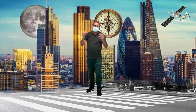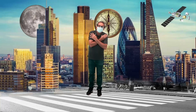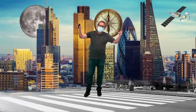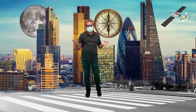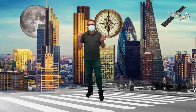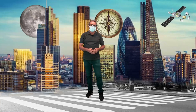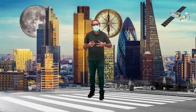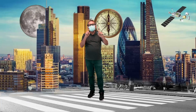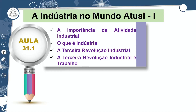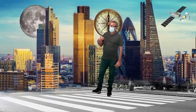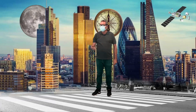Olá, meus queridos jovens, um forte abraço para vocês. Mais uma vez, estamos todos aqui juntos para compreendermos mais um pouco dessas mudanças do espaço geográfico. Eu sou o professor Arimateia, junto com o professor Jorge e o professor Rogério. Nós formamos aquela equipe forte da geografia e aqui no segundo ano estamos juntos. Iremos falar da indústria, a importância da atividade industrial, o que é a indústria, a terceira revolução industrial, a revolução industrial e o trabalho. Tudo isso nós vamos ver nesta aula.